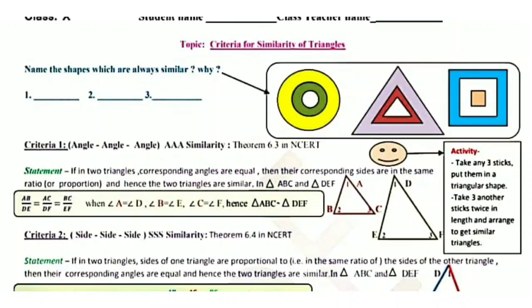In triangle ABC and triangle DEF, if the corresponding angles are equal — angle A equals angle D, angle B equals angle E, and angle C equals angle F — then the corresponding sides are proportional: AB upon DE equals AC upon DF equals BC upon EF. Hence triangle ABC is similar to triangle DEF.